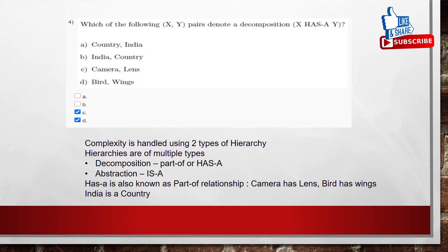Coming to the question 4. Which of the following X, Y pairs denote a decomposition X has a Y. Coming to the options, country-India, India-country, camera-lens, bird-wings.